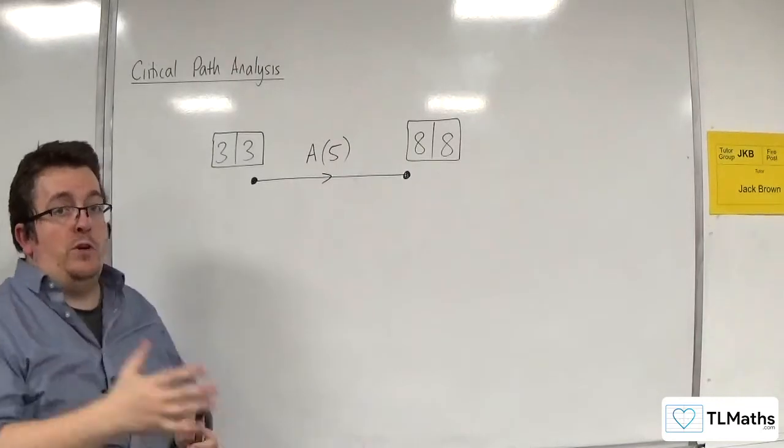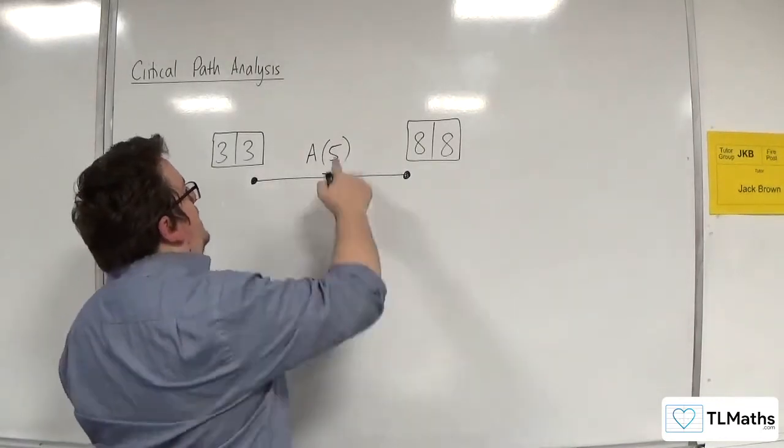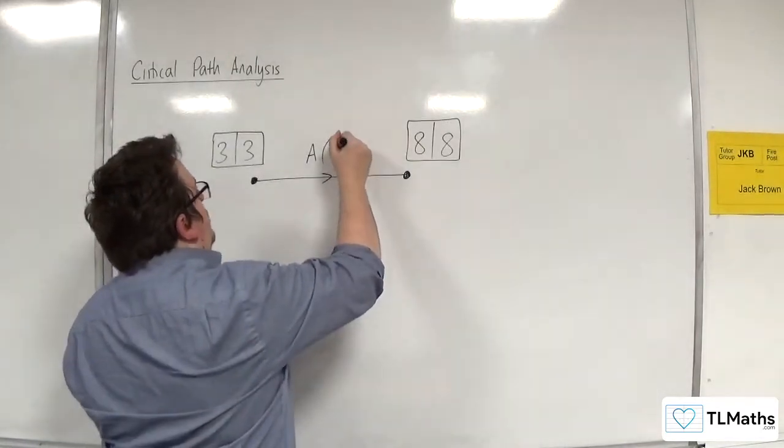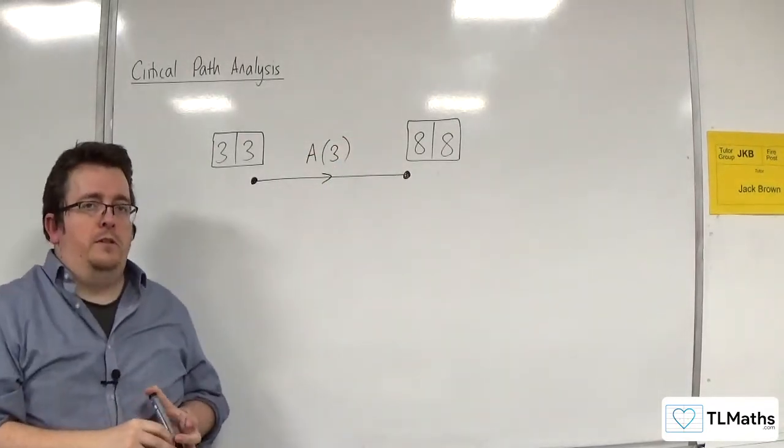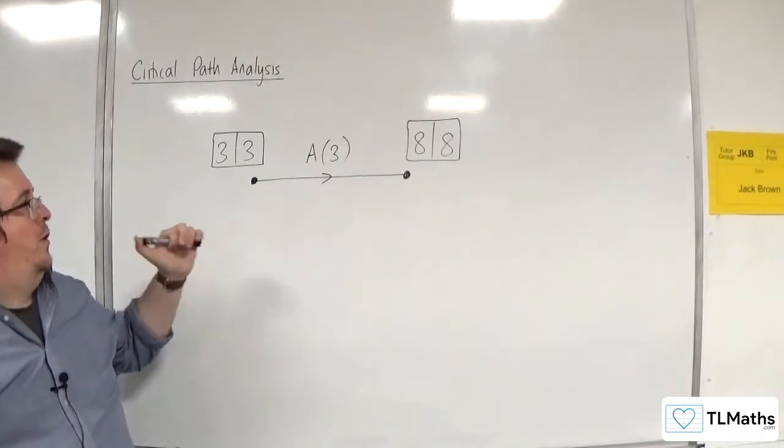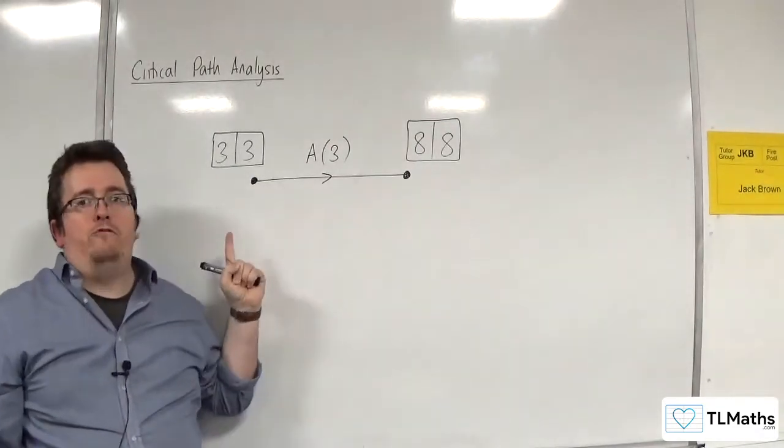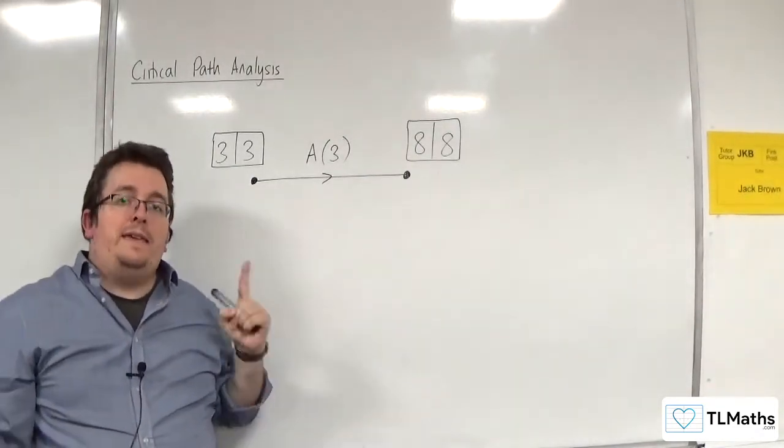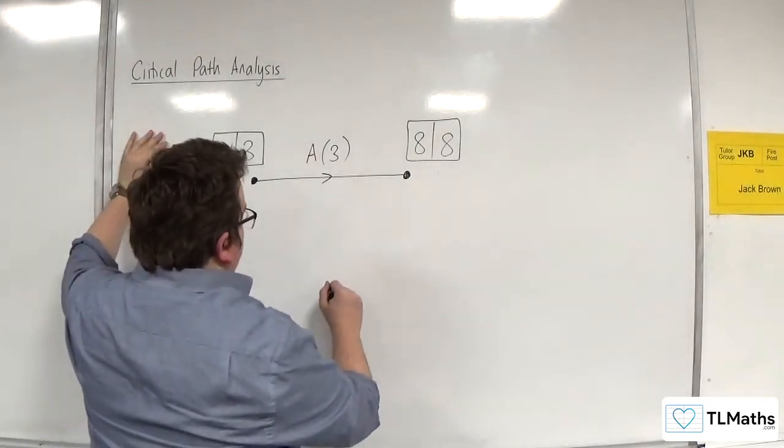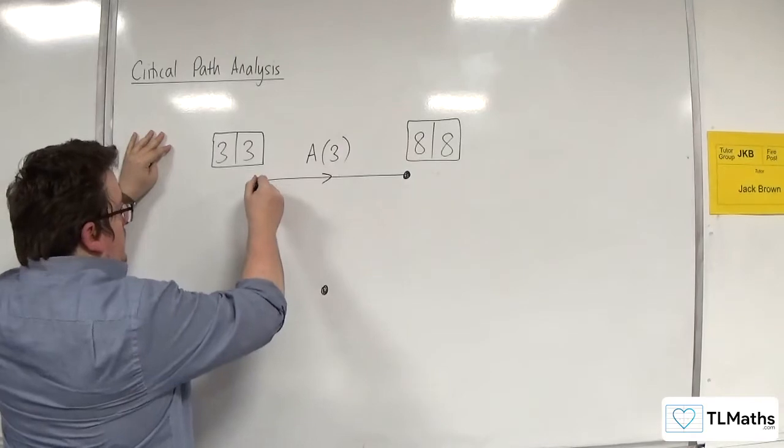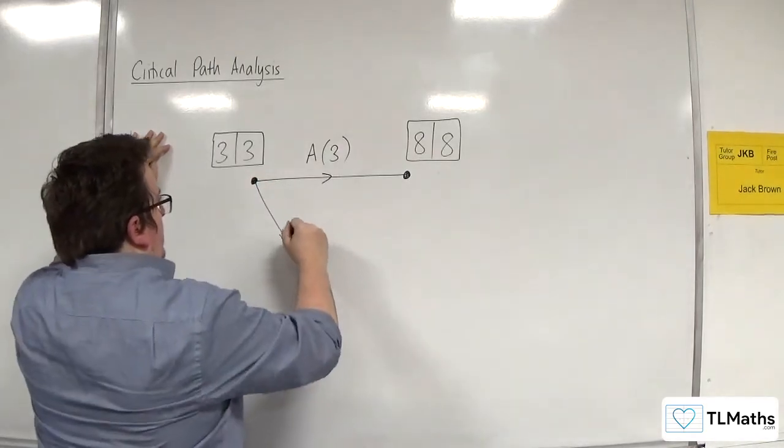You can have situations. What I was alluding to there is that if this duration was 3, then A is not critical. And you might be thinking, well, can this situation ever arise? Well, yes, it can. So what you can have, for example, is something like this.